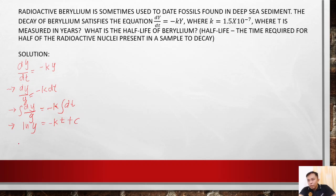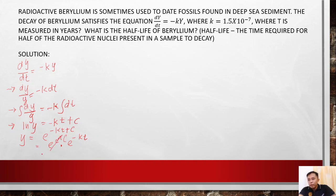Where c is a constant. We need only y on the left side, so y equals e to the power of negative kt plus c. We can rewrite this as e to the c times e to the negative kt. Since e to the c is just a constant, the final equation is y equals c times e to the negative kt.